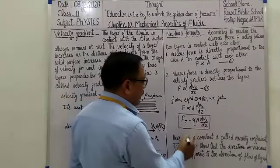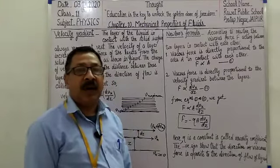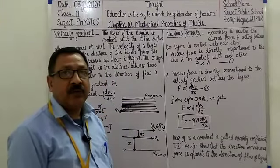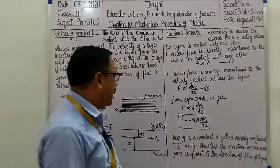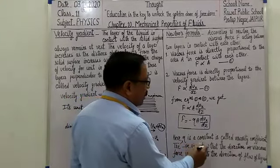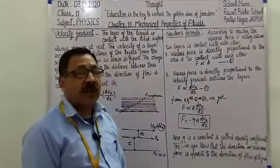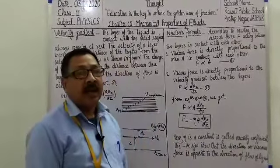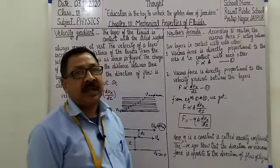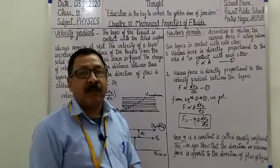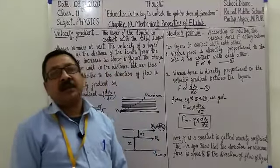Here eta is a constant called viscosity coefficient — हमने critical velocity में भी eta का formula देखा था। The negative sign is so that the direction of viscous force is opposite to the direction of flow of liquid। यह negative sign show कर रहा है कि viscous force की direction, liquid/gases जो flow हो रहा है उसकी direction के opposite है। Viscous force एक तरीके का frictional force है — friction शब्द हम solid के लिए use करते हैं जबकि fluid में वही friction force viscous force के नाम से जाना जाता है।